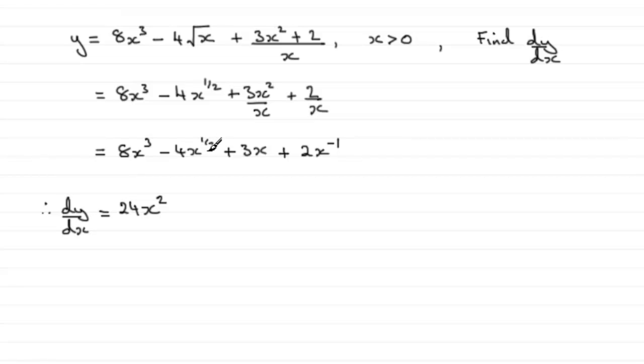For the next one, we've got half times the minus 4, so that's going to be minus 2. Subtract 1 from the power and you've got x to the power minus 1 half.